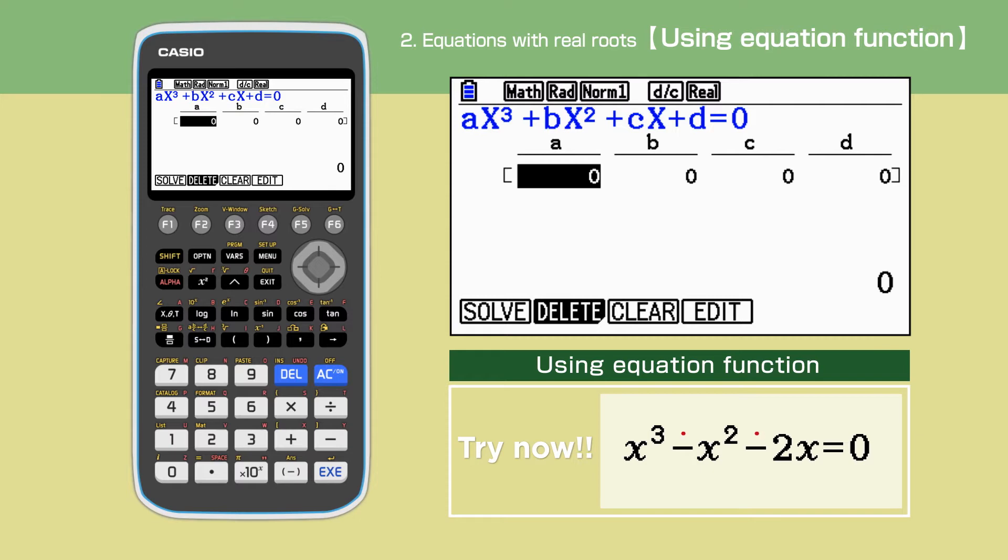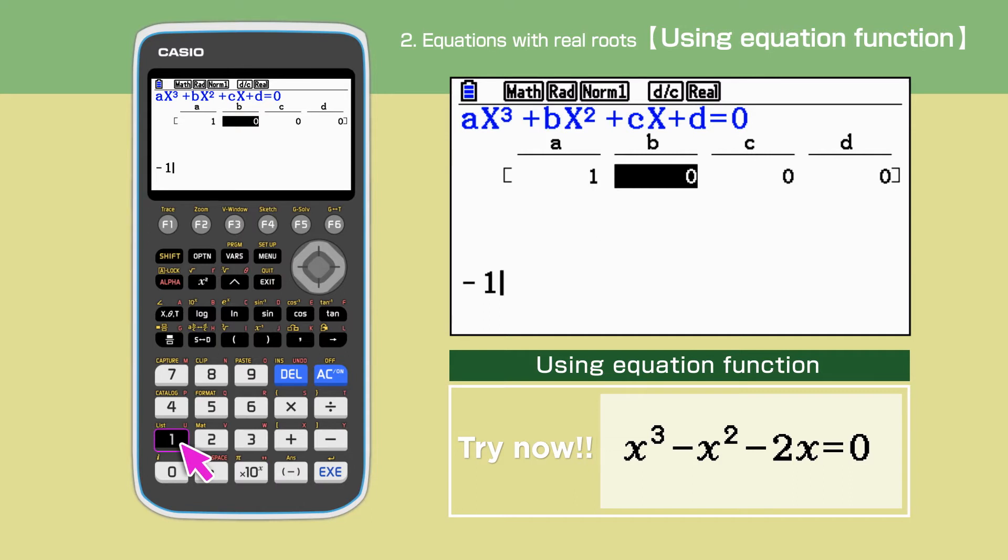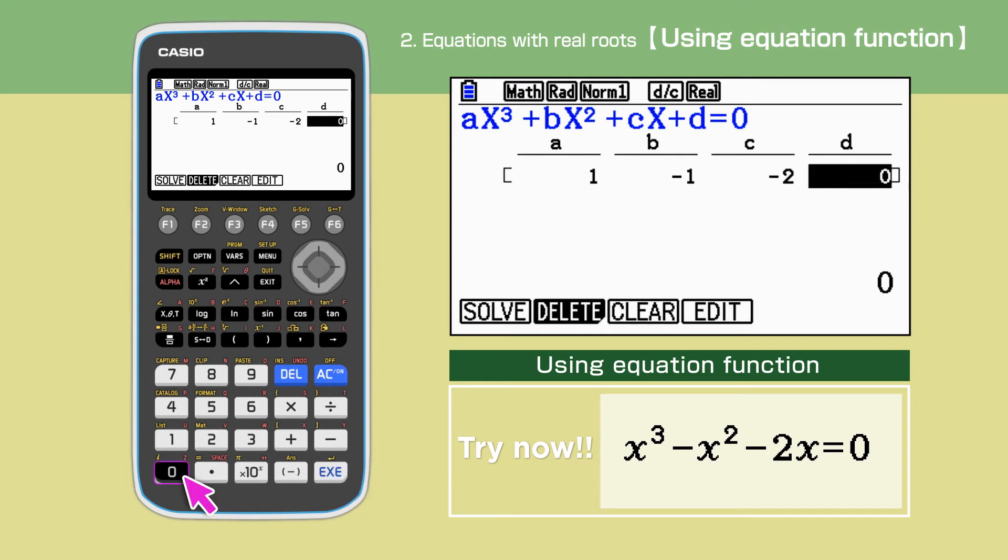The equation needs to be entered in the form of f of x equals 0. Make sure to use bracket minus, not subtraction minus, to input negative numbers. Enter the coefficients 1, minus 1, minus 2, and 0.